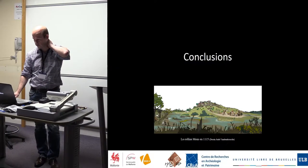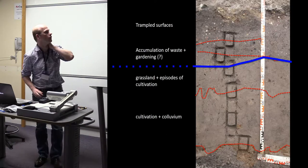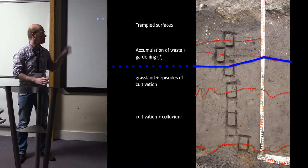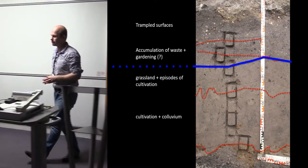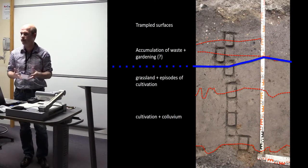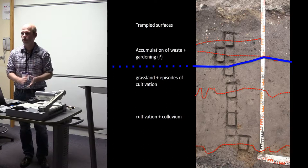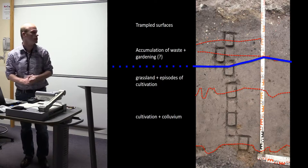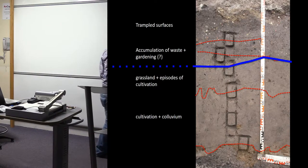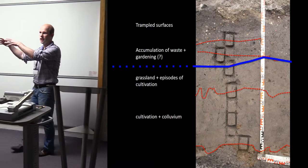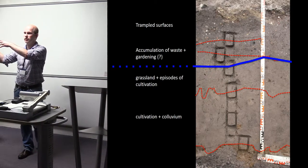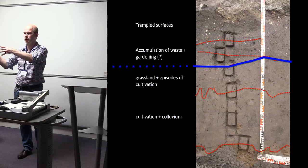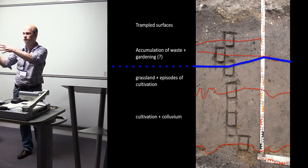What about the implications of studying such one profile? We can tell something about what happened at this location, but we can also tell something about the broader environment. Especially because we know now that with colluvium coming in, this implies that there have been agricultural activities upslope, which is right in the center of where the archaeologists and historians have situated the town.